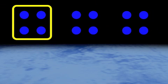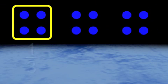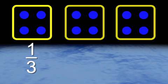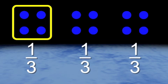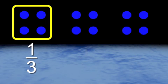In this example I used a single object, but fractions can represent a section of a group. For instance, this can be called one third. There are twelve circles, but one section of the three groups is circled. I have one, but I need a total of three to make this group complete. This is how a fraction can represent a section of a larger group.